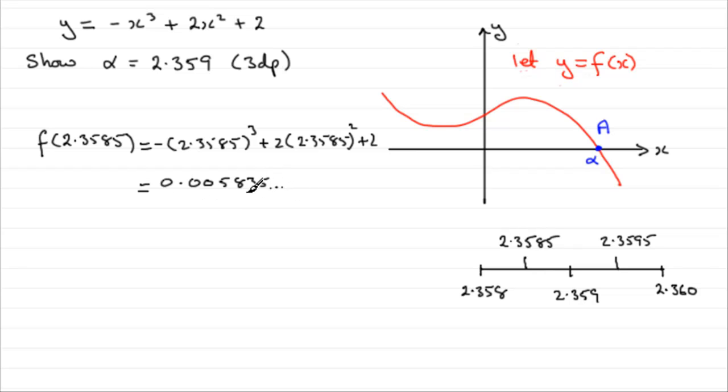And what does this mean? Well, it clearly means that it's a positive value, very close to zero, and that is that if you took this point here, 2.3585, it comes out as a point above the x-axis. Very close, though. I mean, I know I've magnified this here, but it's very close to the x-axis.